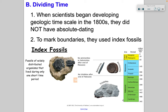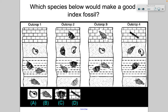Ammonites and Belemnites are found at the end of the Mesozoic. You don't see these fossils in the Cenozoic, which is the current era we're in.